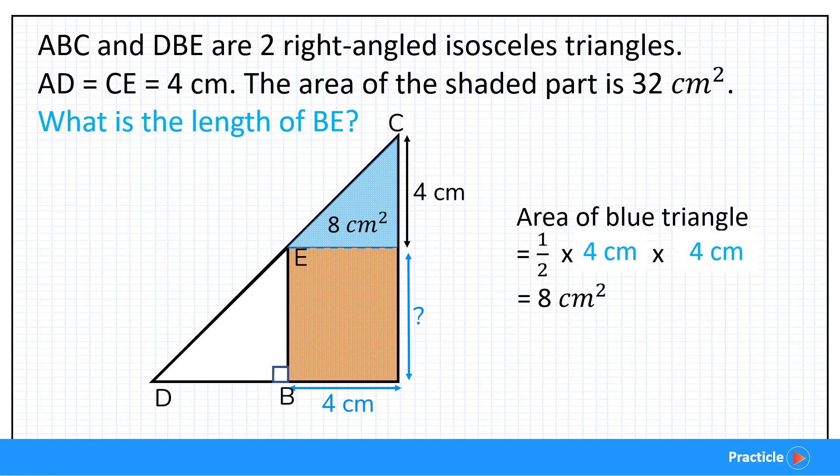Can you guess what we are going to do next? If you thought of subtracting the area of the blue triangle from the shaded area, that's exactly what we are going to do. So well done for thinking of that. When we subtract 8 square centimeters from 32 square centimeters, what do you get? Do you get 24 square centimeters? If you did, well done.